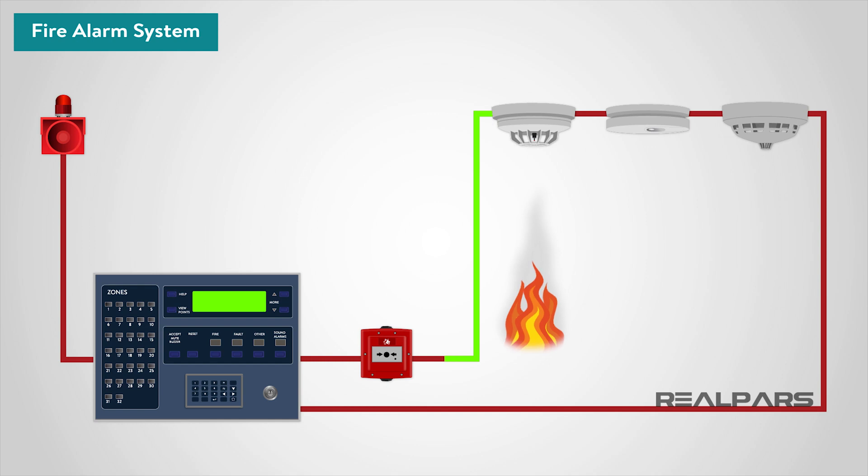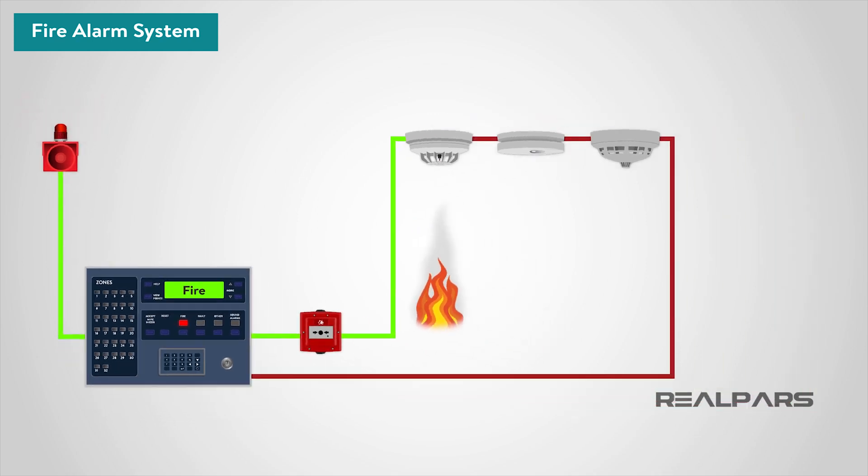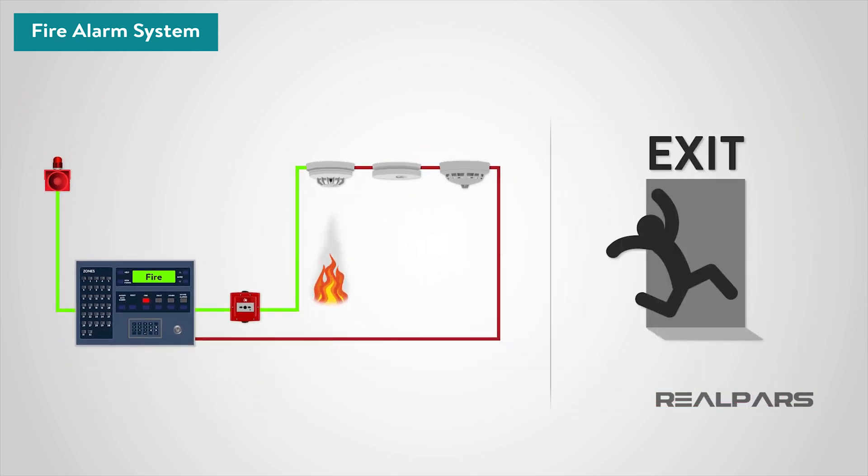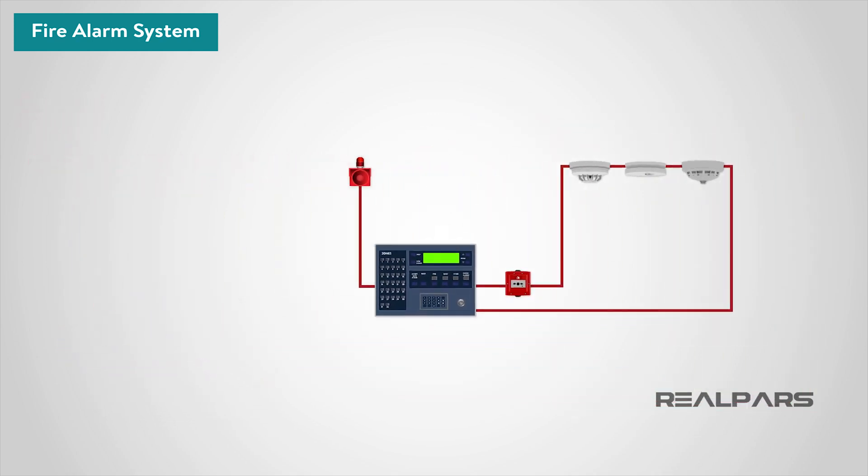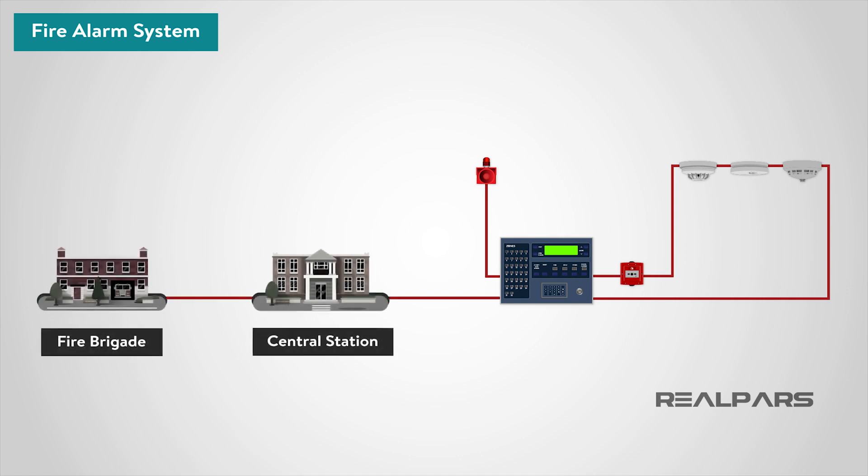Whatever the method of detection is, if the alarm is triggered, sounders will operate to warn people in the building that there may be a fire and to evacuate. The fire alarm system may also incorporate a remote signal system which could then alert the fire brigade via a central station.